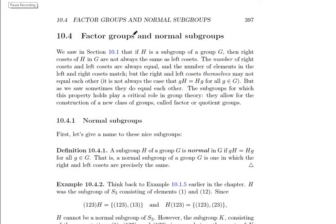Okay, moving onward. We saw in section 10.1 that if H is a subgroup of a group G, then right cosets of H are not always the same as left cosets. We had one example, and that group was non-abelian. It was the group of S3.